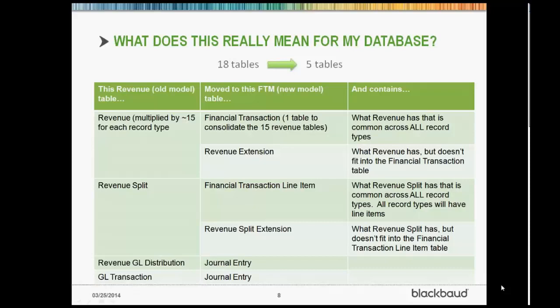An example of that: in the old model, we have the revenue table. Conceptually, that's being split into two — a financial transaction table that has information applicable to all record types, and a revenue extension table for things specific to revenue transactions. Similarly, the revenue split table is going to the financial transaction line item, with a revenue split extension table as well. The revenue GL distribution table and GL transaction are both going to journal entry. So we're really simplifying the database structure for reporting needs, surfacing reversals and adjustments, and setting the foundation for that information to be surfaced much better, faster, and easier.